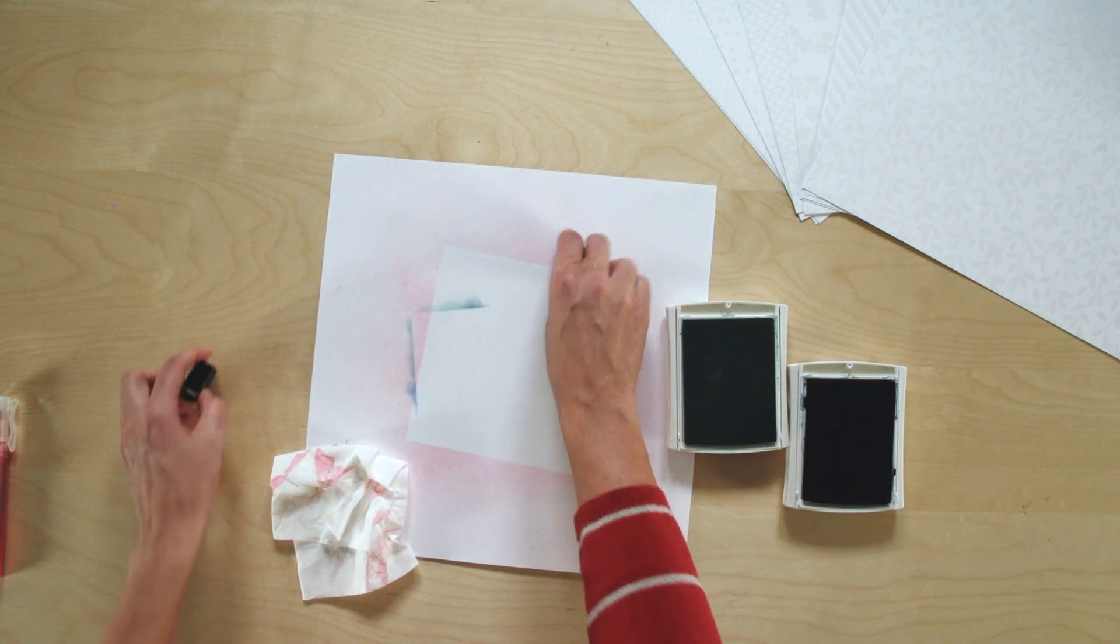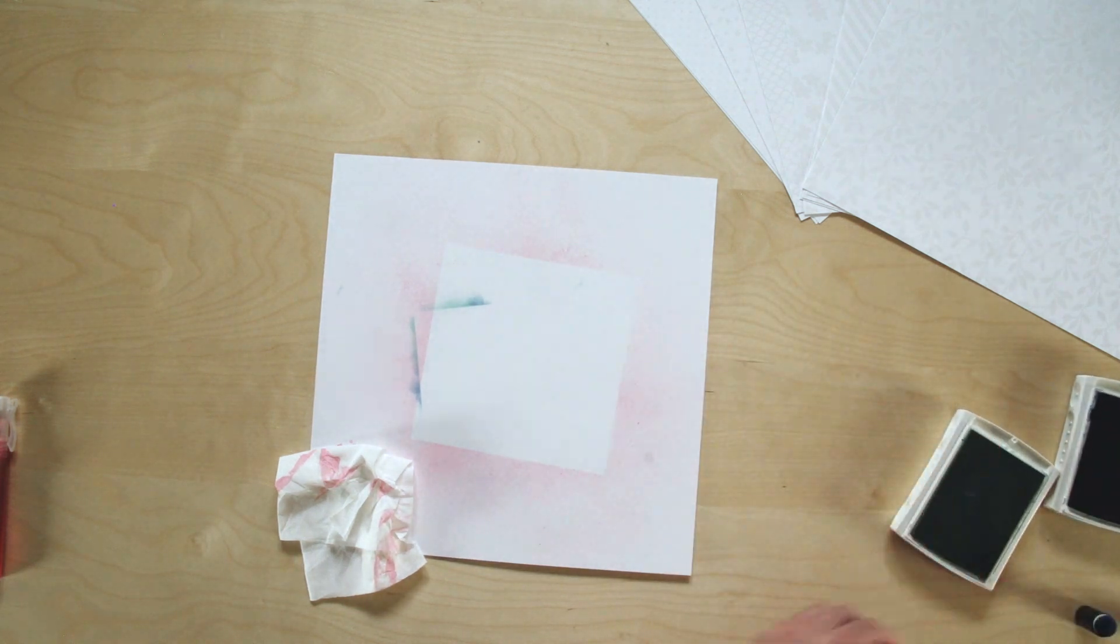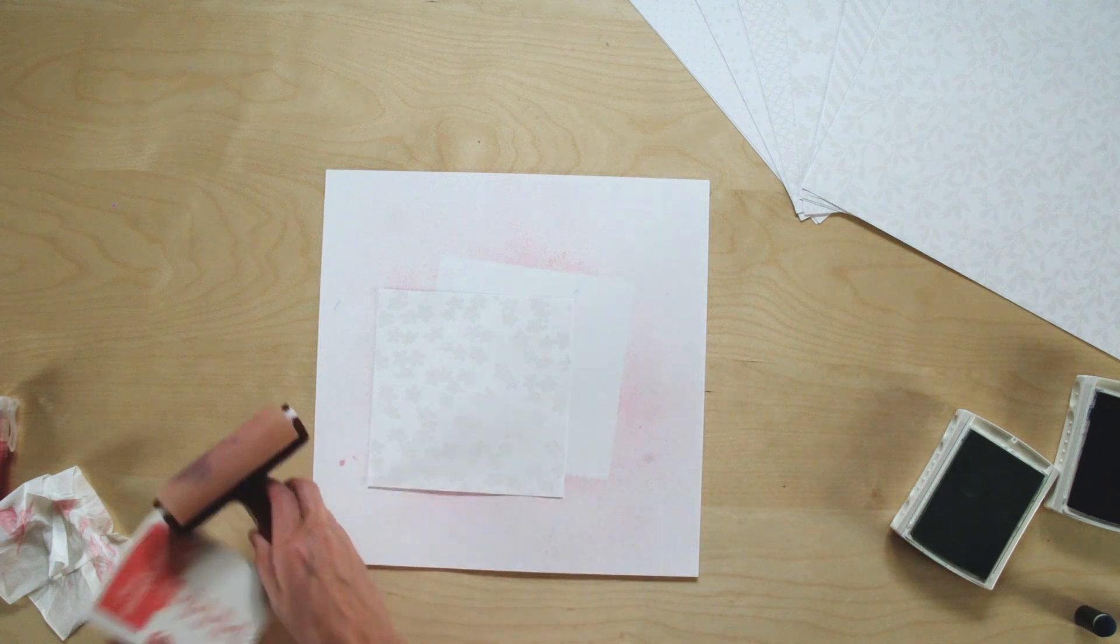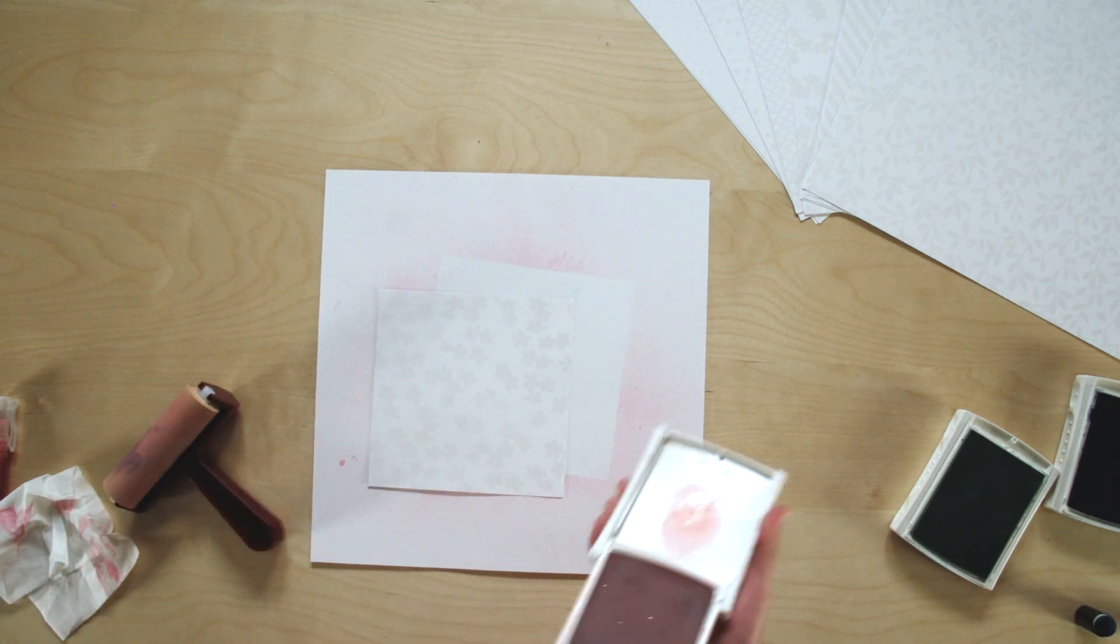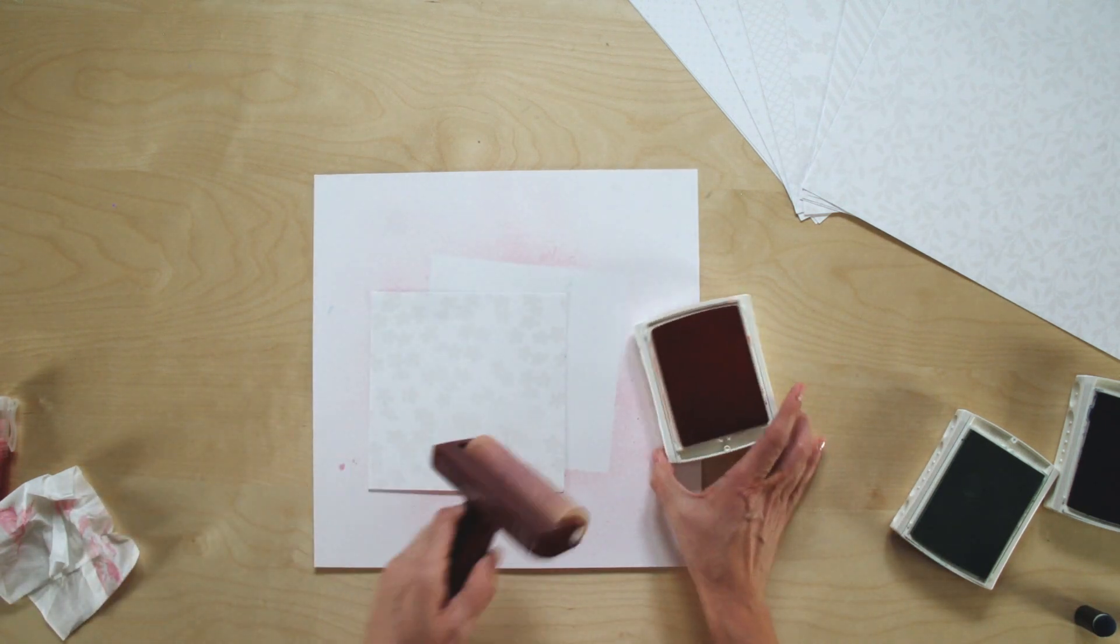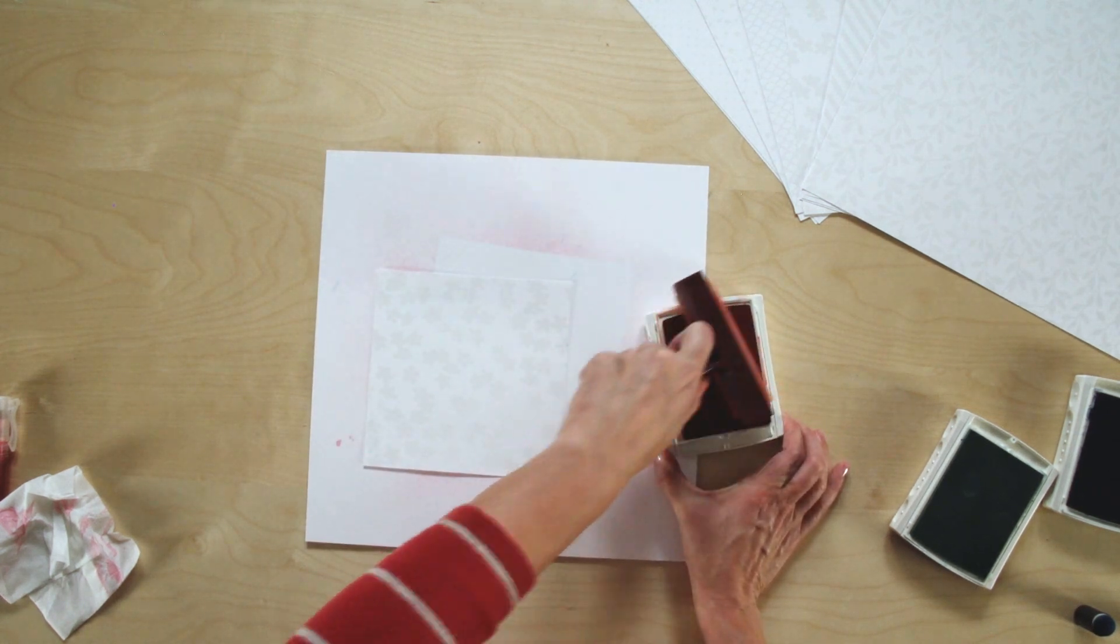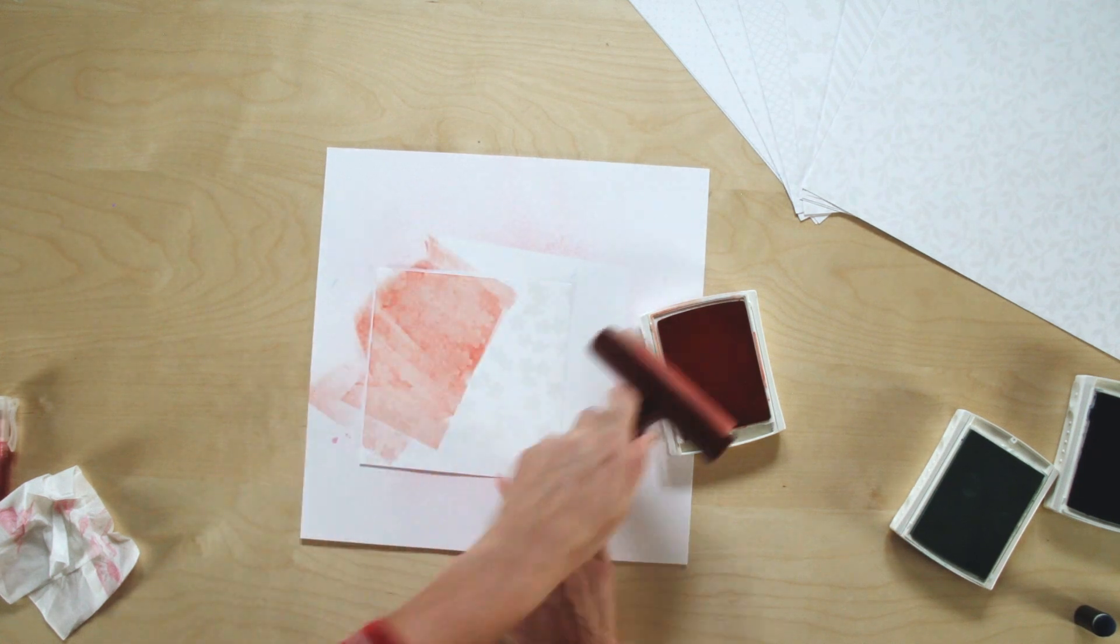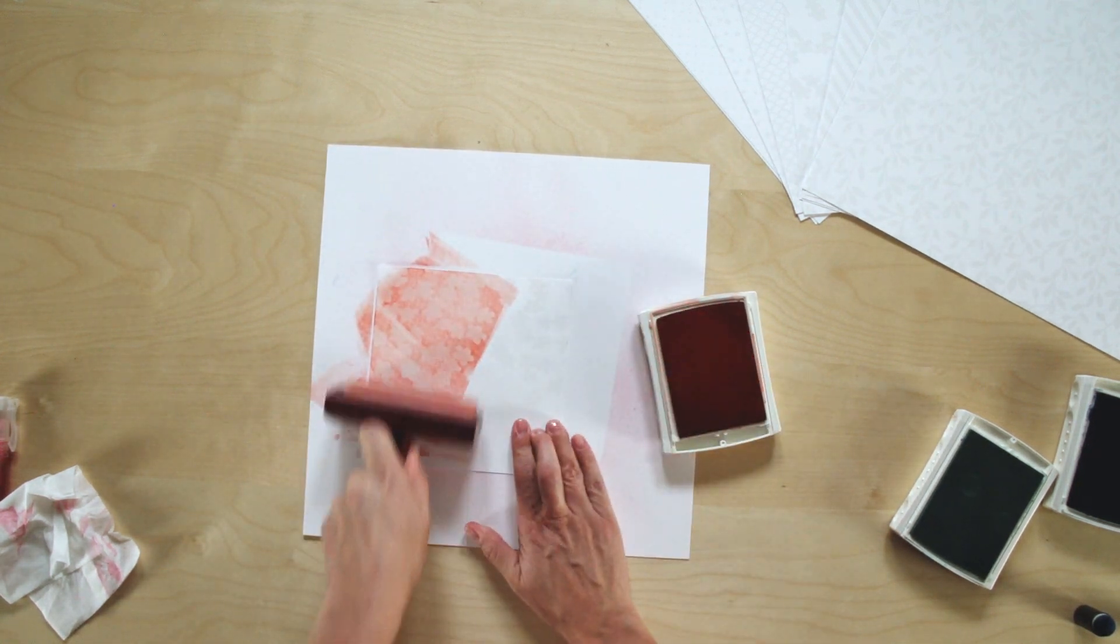Now a quick way to add a lot of color to your project is by using the brayer. The brayer is another one you can use to get some of those gradations of color as well. All you'll need to do is ink up your brayer and then just apply that directly to your paper.